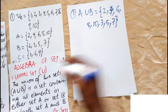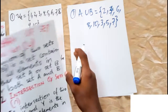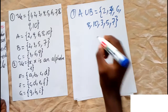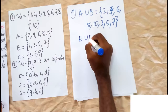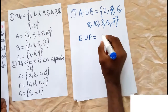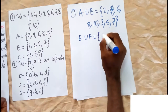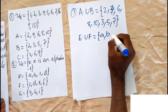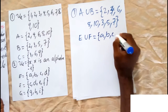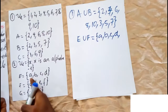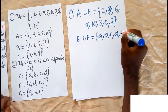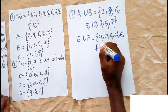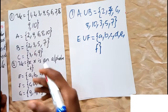We can give another example: E union F. We have A, B, C, D — C and D are already written — then E and then F. So that is for union of sets. The next topic we have is intersection of sets.